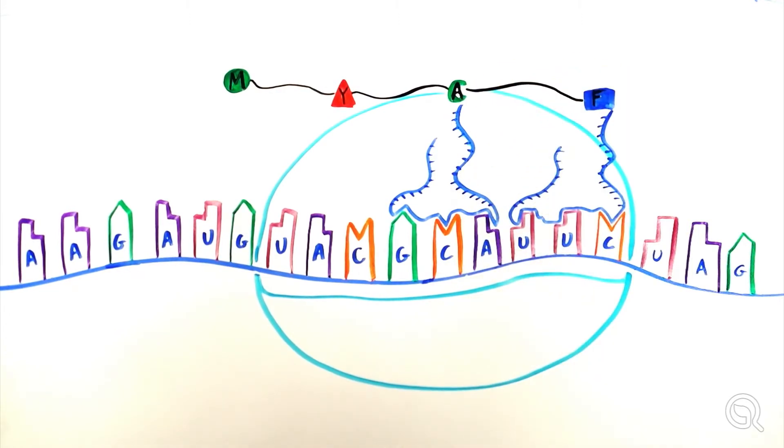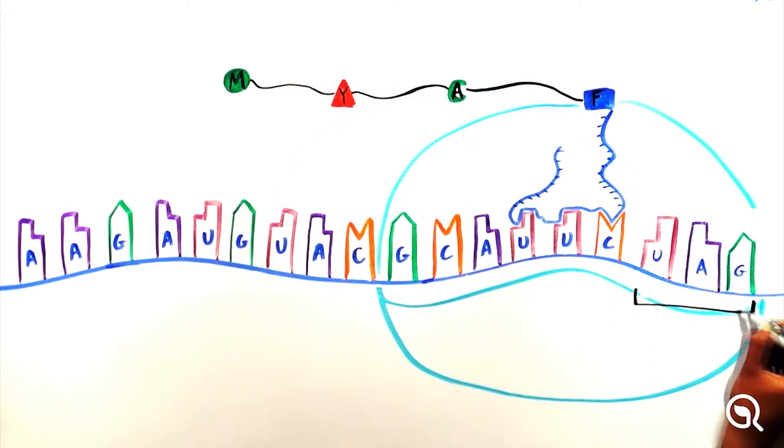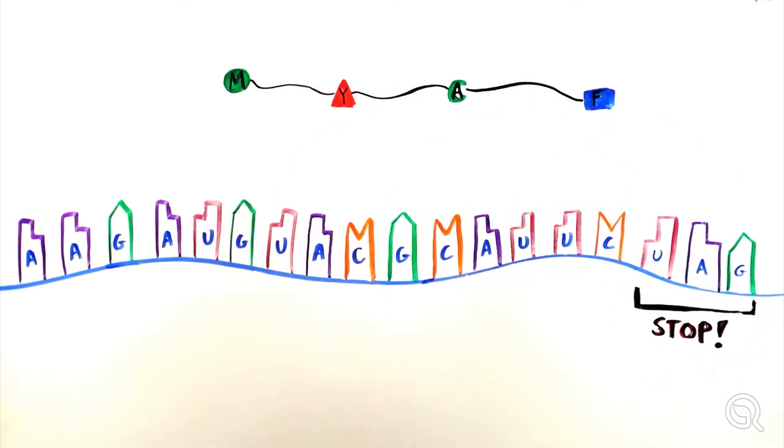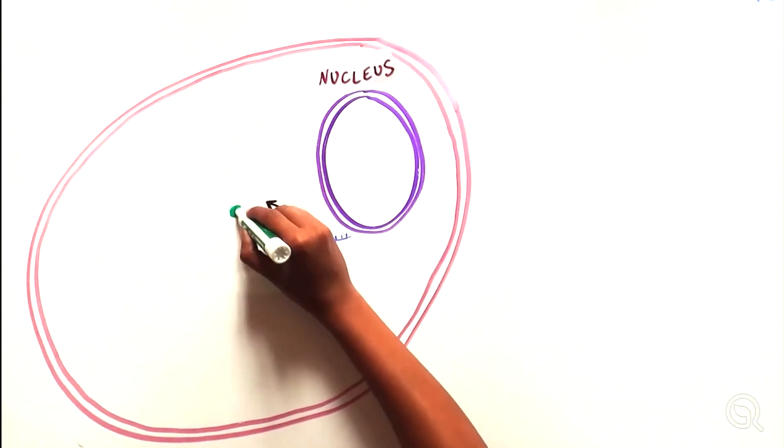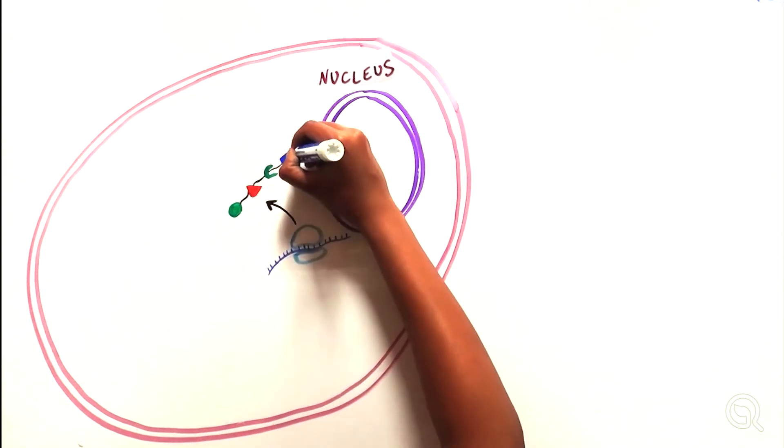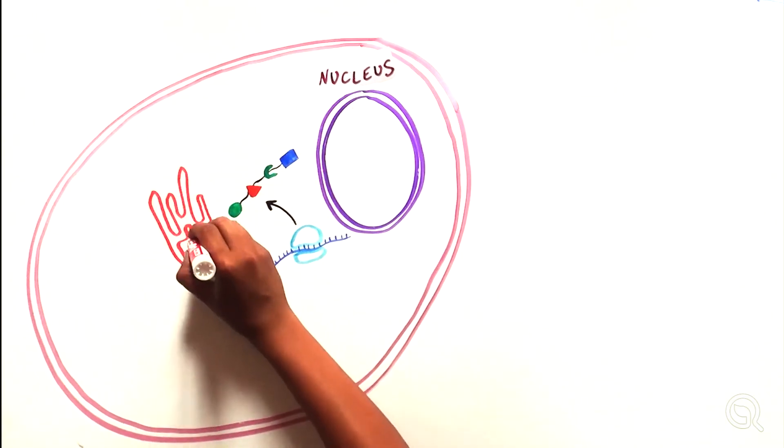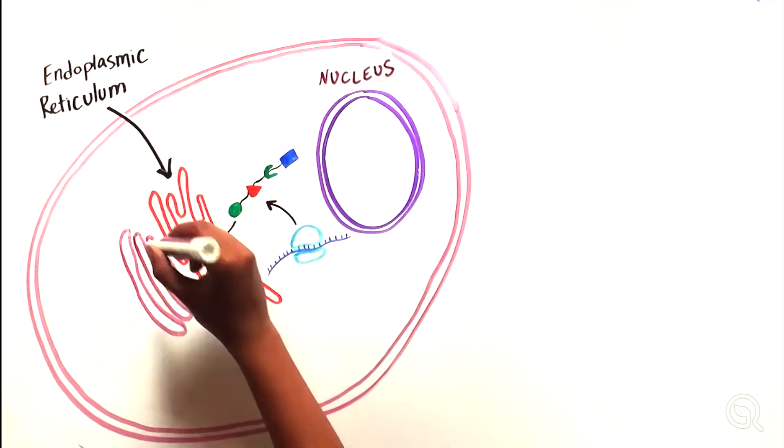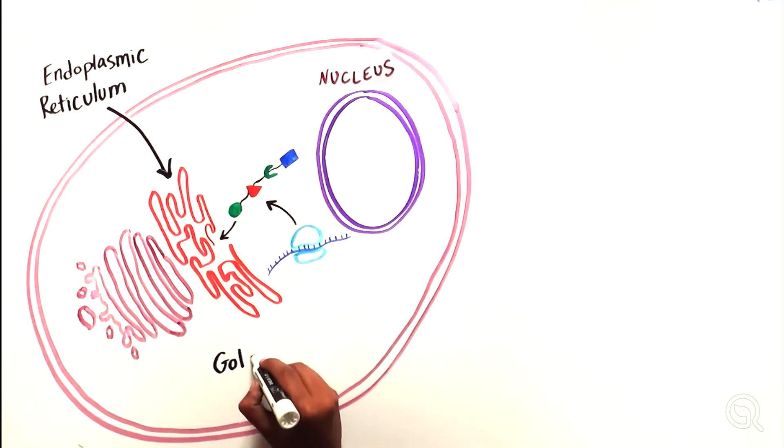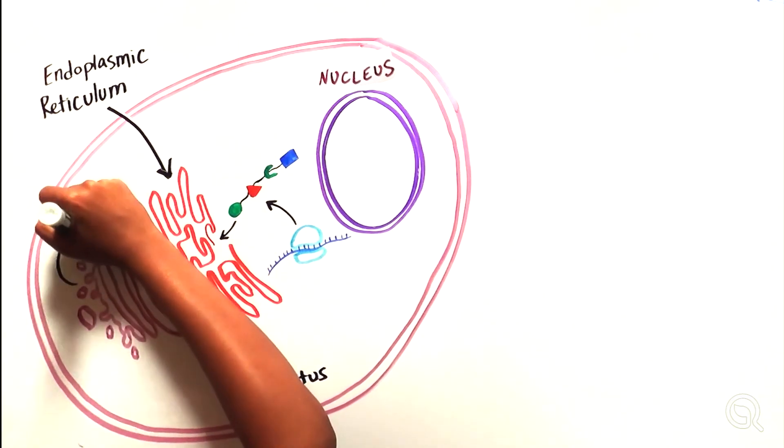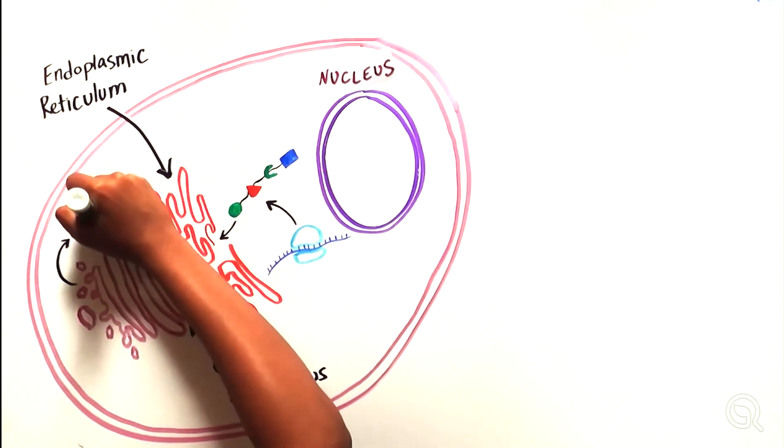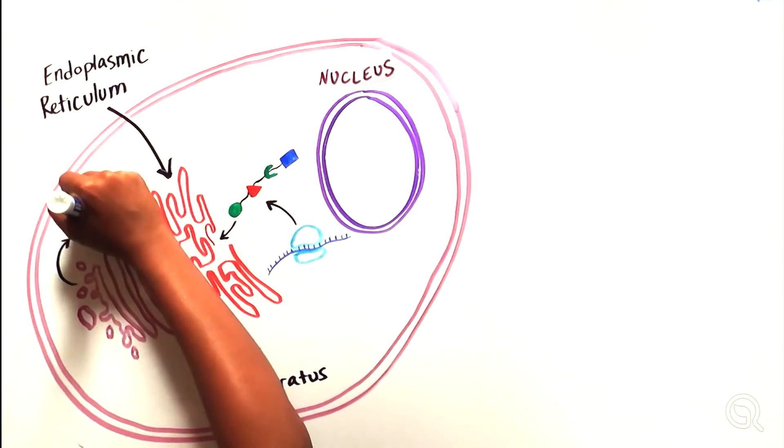This process continues until the ribosome hits one of the three stop codons, which signals the ribosome that it should stop translating. Once a stop codon is reached, the resulting amino acid chain is released from the ribosome and usually transported through organelles known as the endoplasmic reticulum and the Golgi apparatus. These organelles help fold the amino acid chain into the correct shape, as well as complete any additional modifications needed to form a complete and functional protein.